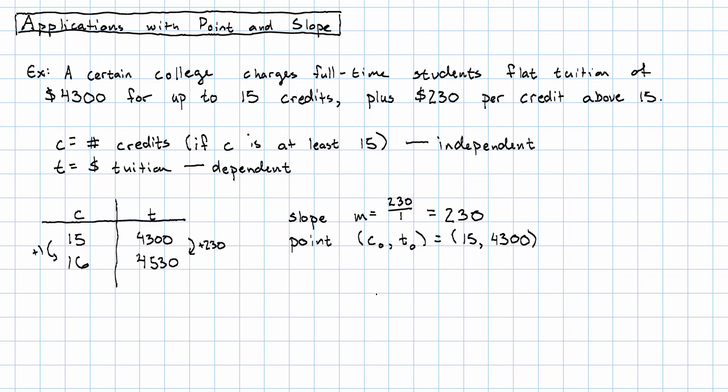And then, now we're ready to write down the point slope form. t minus the given value of t is 4,300 equals 230 times c minus the given c is 15. And that's our equation. That equation relates the tuition to the number of credits.